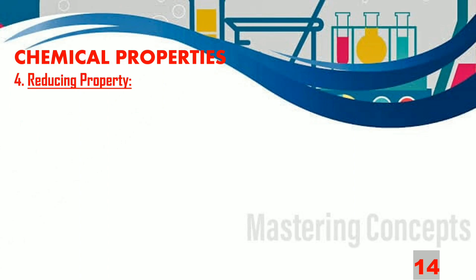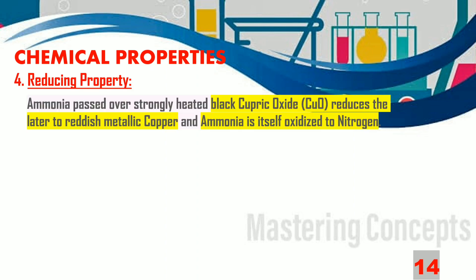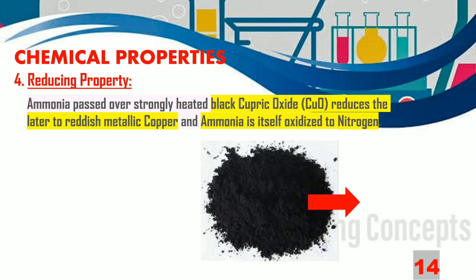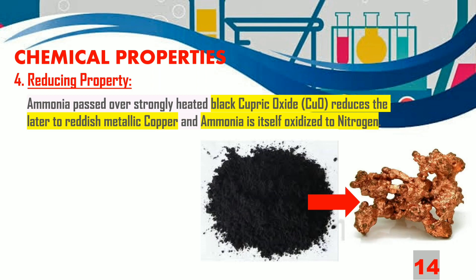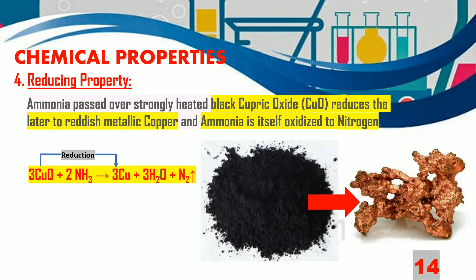Let us now learn about the reducing property of ammonia gas. When ammonia gas is passed over strongly heated black-coloured cupric oxide, ammonia reduces cupric oxide to metallic copper (red in colour) and is itself oxidized to nitrogen. The complete redox reaction is: 3CuO + 2NH3 → 3Cu + 3H2O + N2.